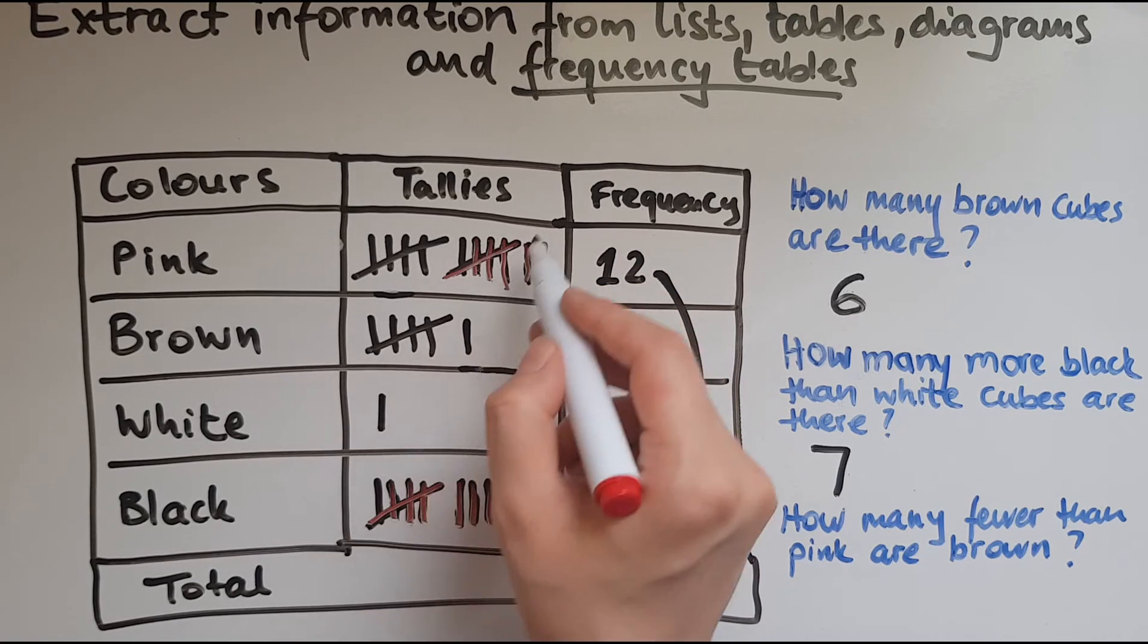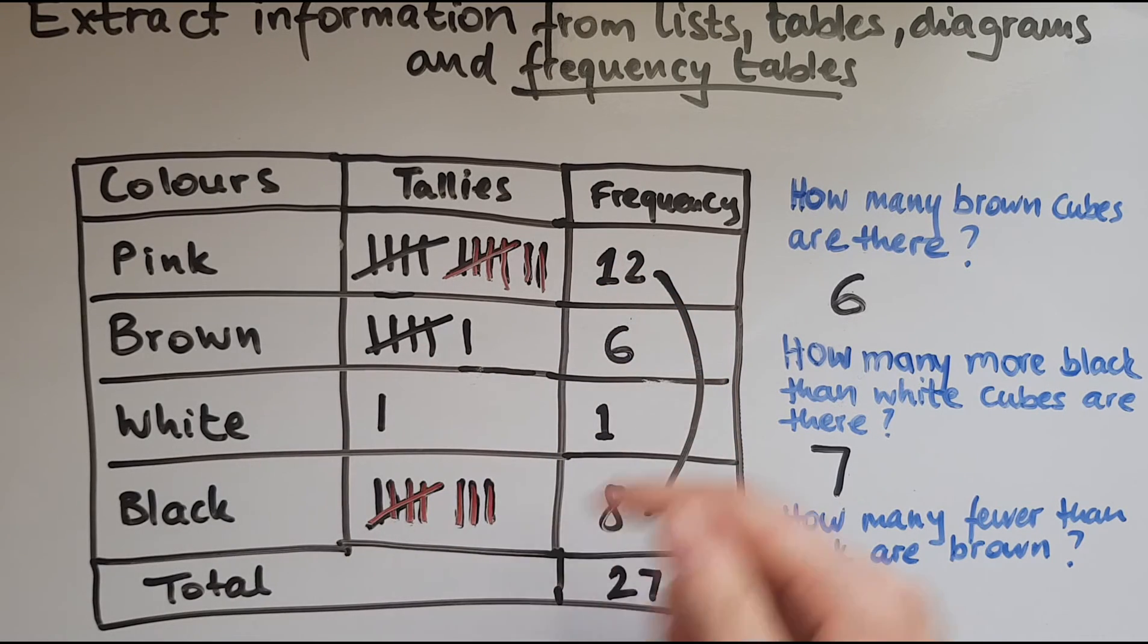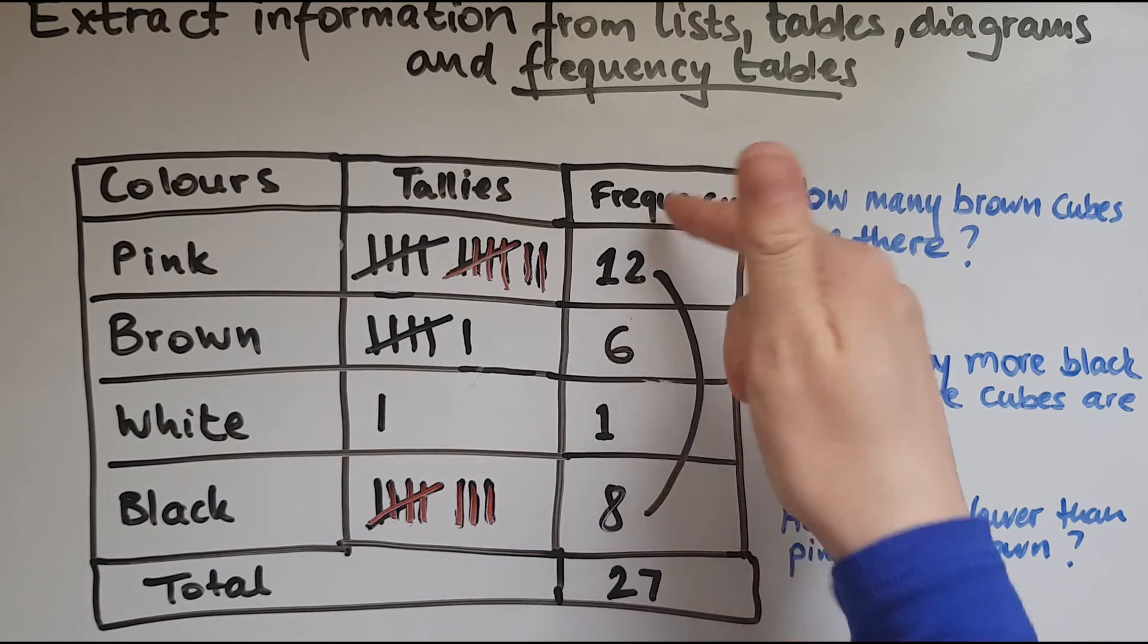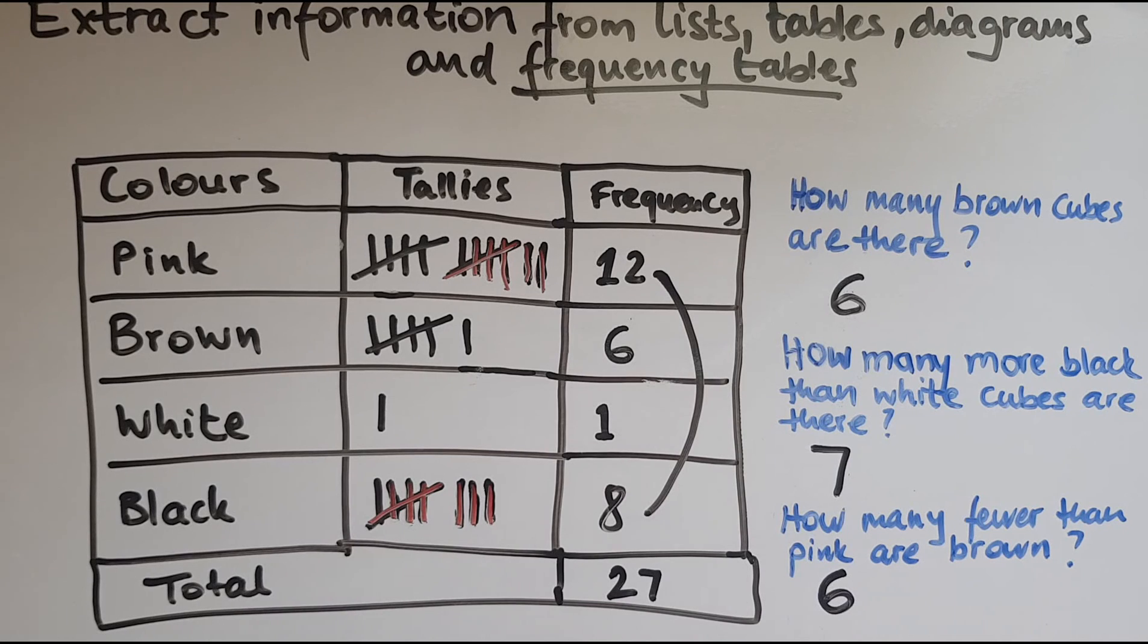So we've got one, two, three, four, five, six. And again, twelve take away six gives me six. Six and six gives me twelve. So there are six fewer brown than pink. Yeah, so entry 2 and entry 3. Good luck. Thank you.